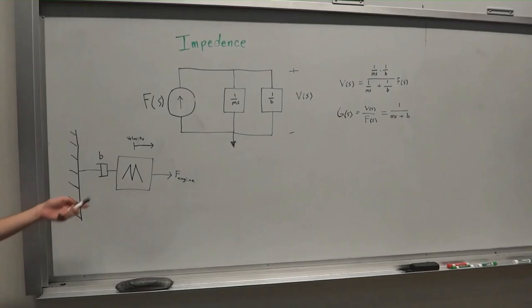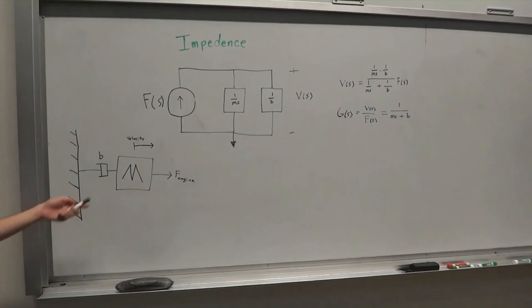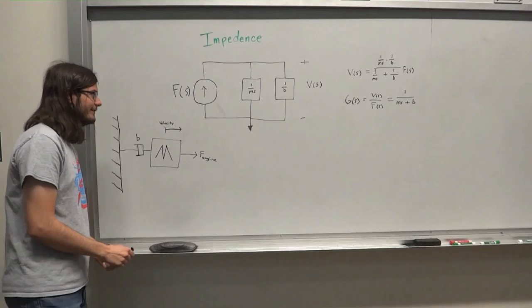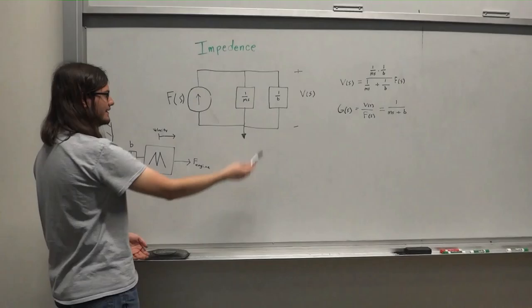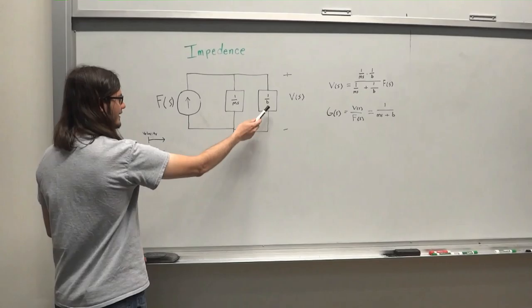So we can take this model and model it as a circuit. See in this impedance diagram right here. So right now we have our force acting as a current source and it's going through these two resistors. One is equal to 1 over MS plus B, which represents our mass here. And then one is 1 over B, which represents our damper right here.